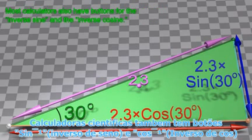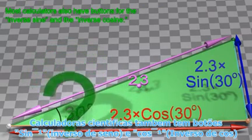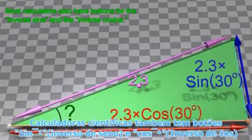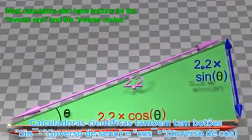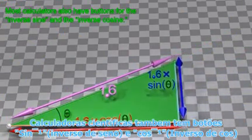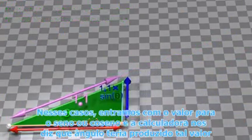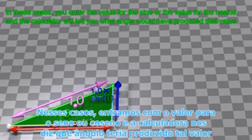Most calculators also have buttons for the inverse sine and the inverse cosine. In these cases, you enter the value for the sine or the value for the cosine, and the calculator will tell you what angle would have produced that value.